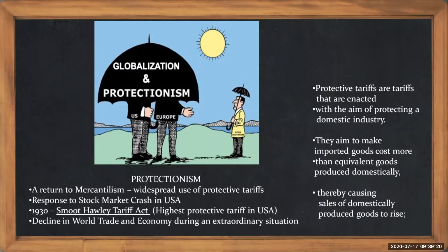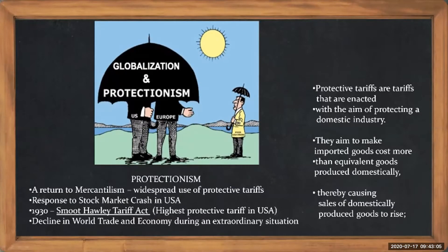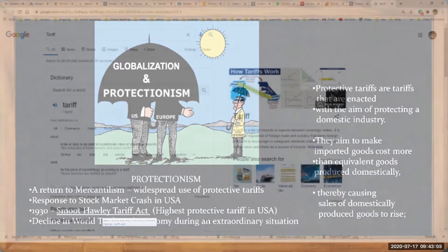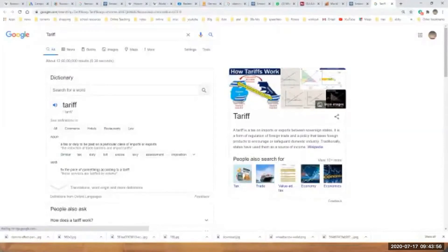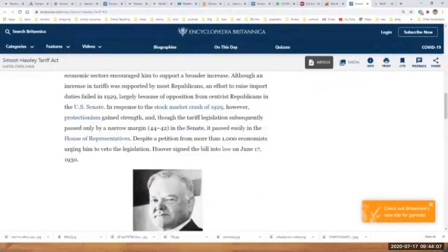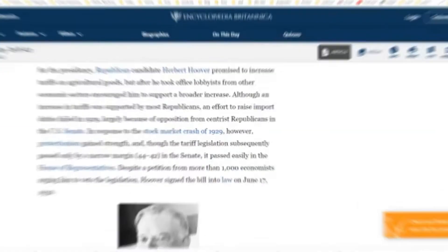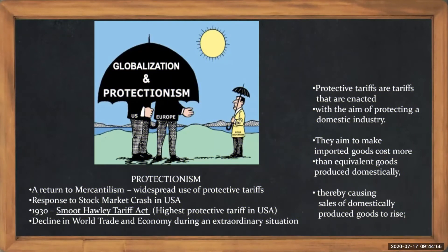In USA itself, when the stock market crashed in 1929, the government responded with the highest protective tariff in the USA — this is called the Smoot-Hawley Tariff Act. It's mainly a tax on imports and a regulation of foreign trade. If a great economic power like USA could also be in this position, what about the rest of the world? In globalization, you cannot expect that if one great event happens in one part of the world, others are not affected.